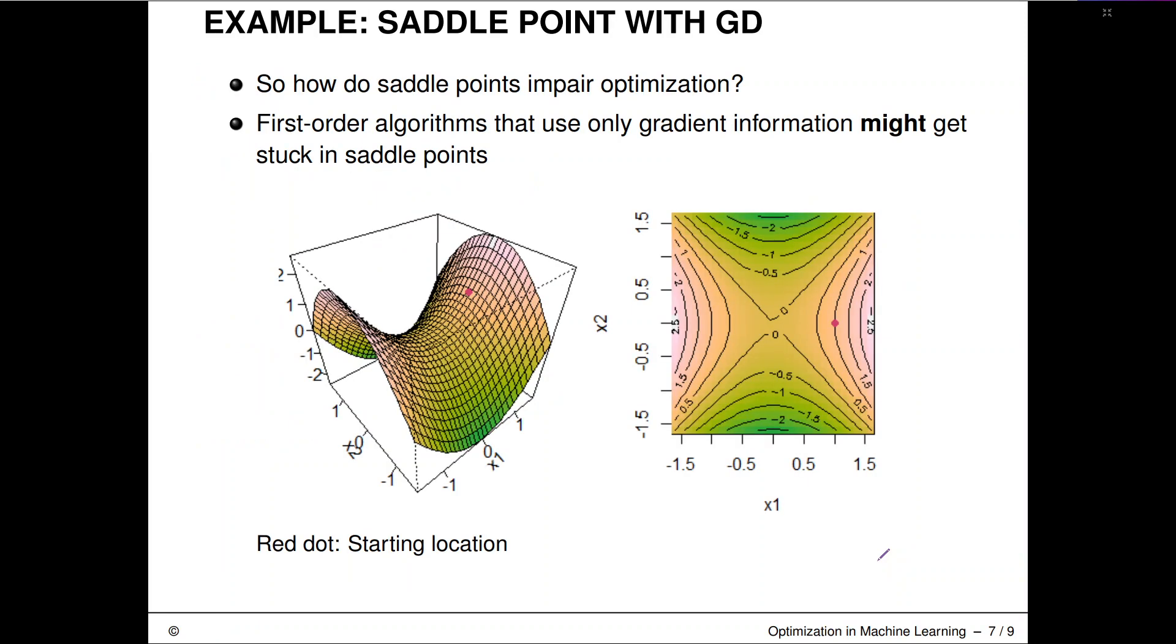How do saddle points impair optimization? For this example, we can actually run gradient descent. We will start from this point here. You can see that after a few steps of gradient descent, we can still get stuck in the saddle point. The gradient at the saddle point is zero.